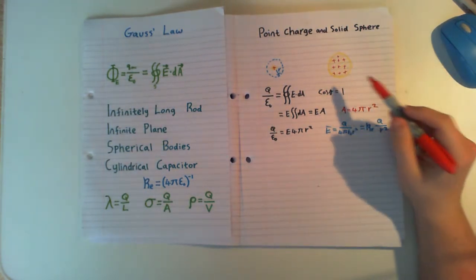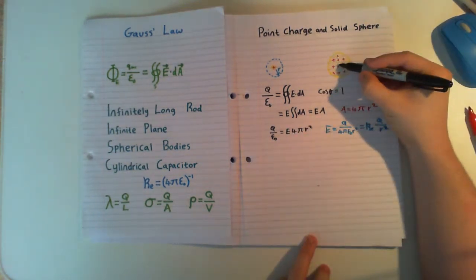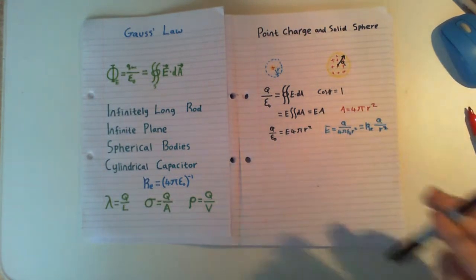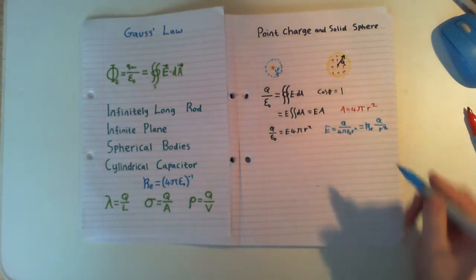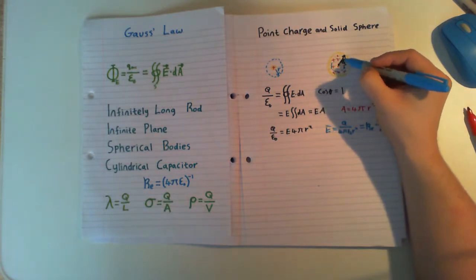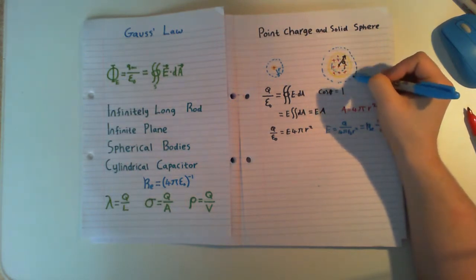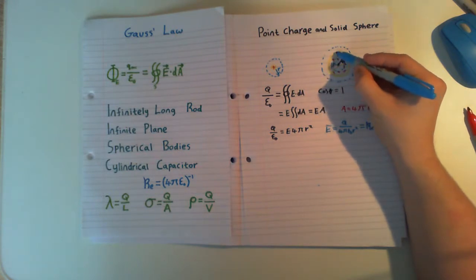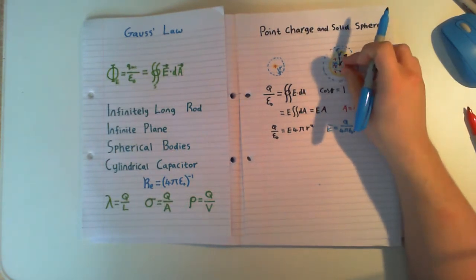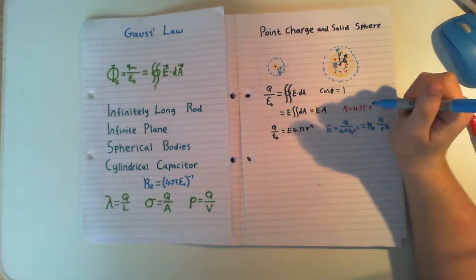Now we're going to look at our conducting solid sphere. We'll take some distance from the centre — we'll call this distance A. We're going to do two Gaussian surfaces: the first Gaussian surface is going to be inside our sphere, and the second Gaussian surface is going to be outside our sphere. In each case the distance is R, but we alter the value of R — first for a small distance, then R keeps expanding from the centre until it equals A, and then keeps expanding to whatever value you want.